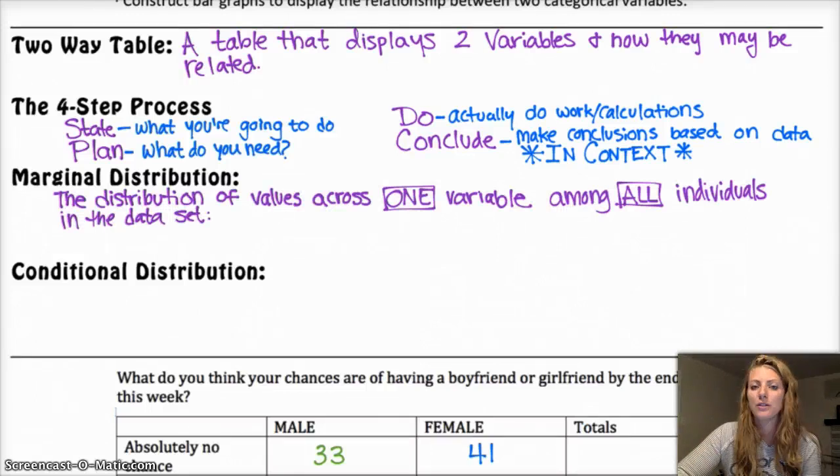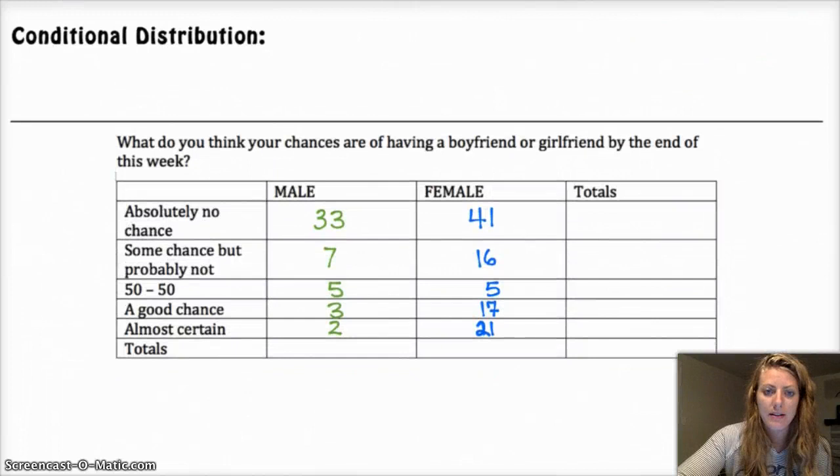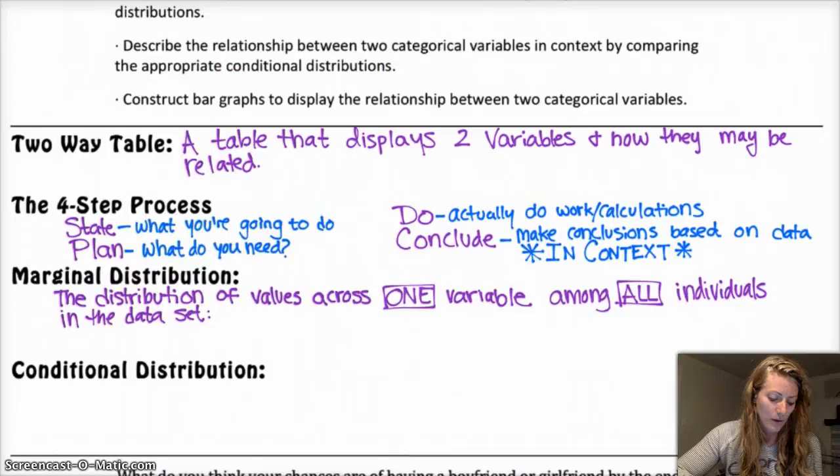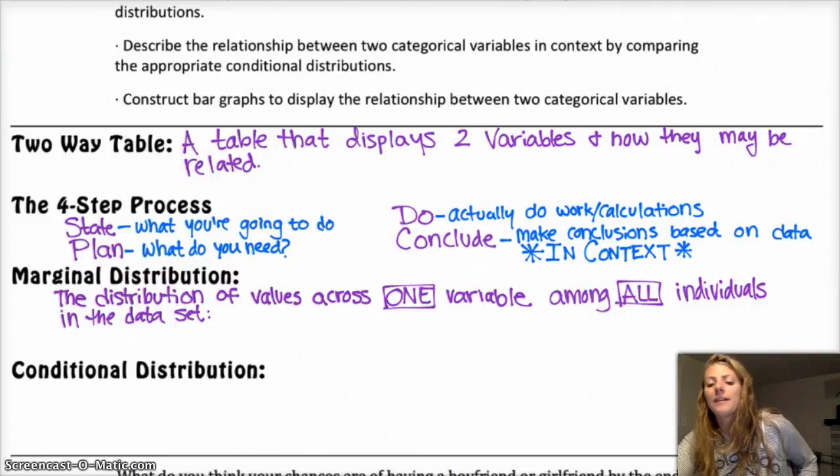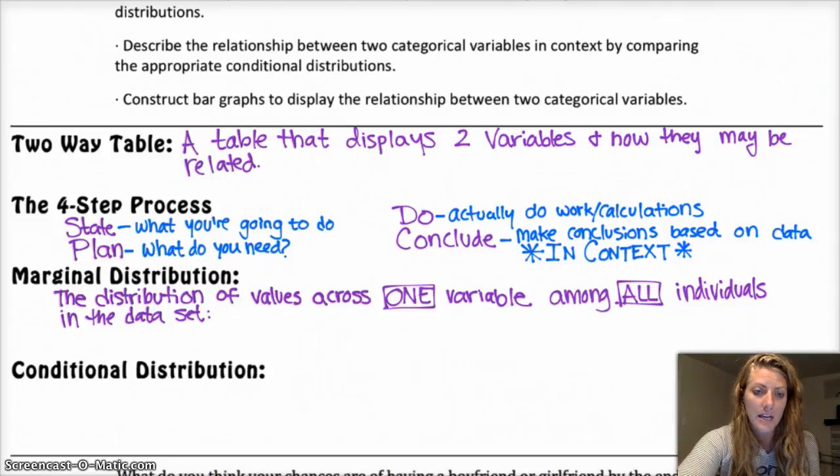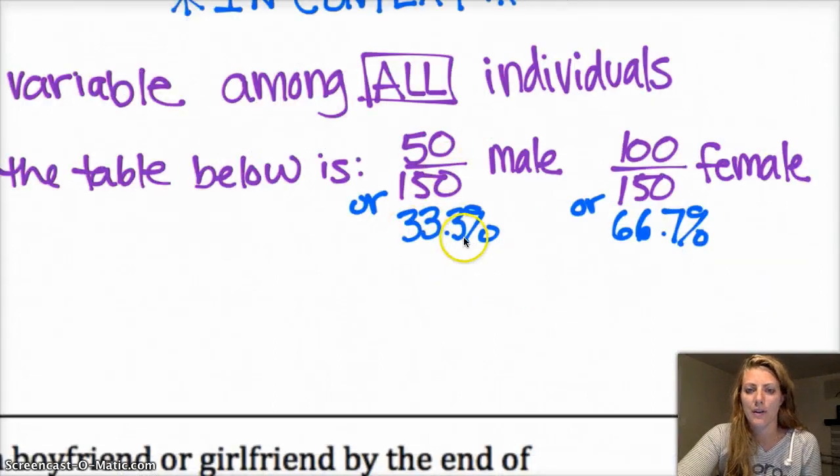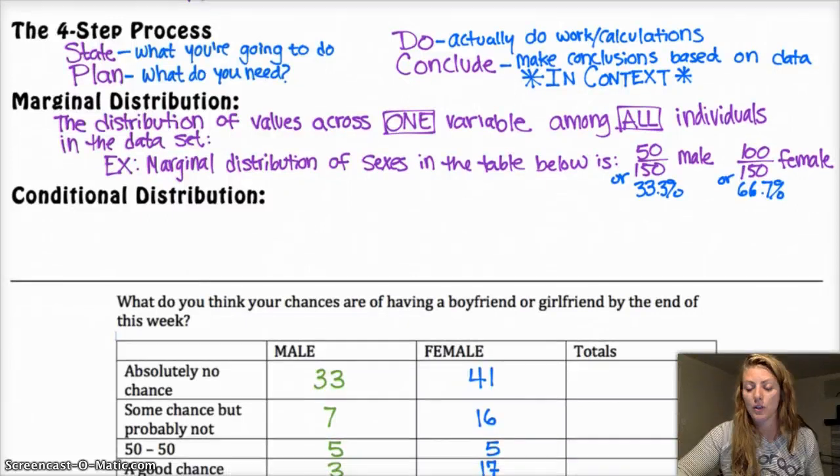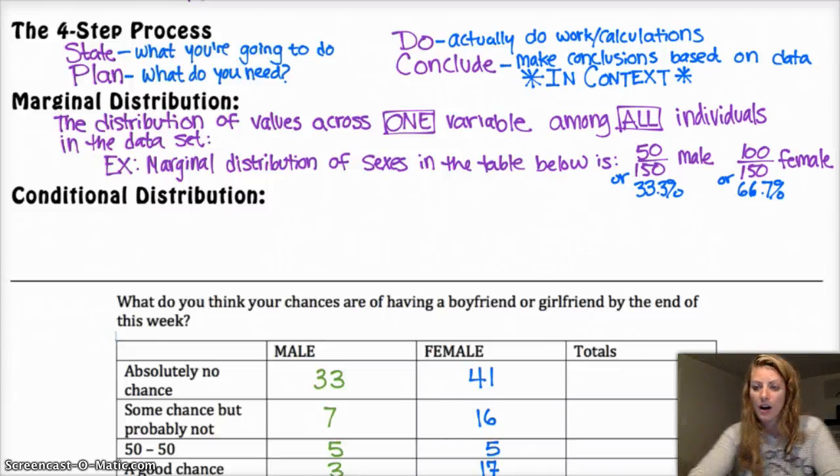Okay, so marginal distribution is the distribution of values across one variable among all of the individuals in the data set. And so basically, for example, if you were to add up all of the males and females, you would get 50 males and 100 females for a total of 150 people in the study. So if I wanted to know the marginal distribution for sex within the study is either 33% male and 67% female, or you could do a third and two-thirds as well. Either one would be fine. But you're basically looking at how many of the total number of people in there were male and how many were female. So you're only looking at one specific variable. You're not looking at the second variable.